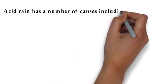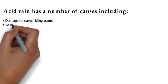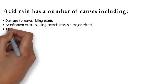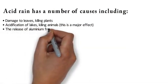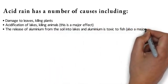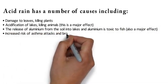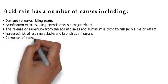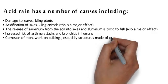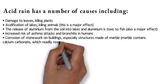Acid rain has a number of effects, including damage to leaves and killing of plants; acidification of lakes, killing animals — this is a major effect; the release of aluminium from the soil into lakes, which is toxic to fish — also a major effect; increased risk of asthma attacks and bronchitis in humans; and corrosion of stonework on buildings, especially structures made of marble, which contains calcium carbonate that readily reacts with acids.